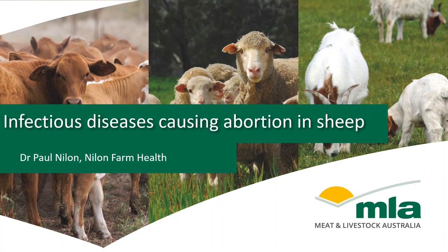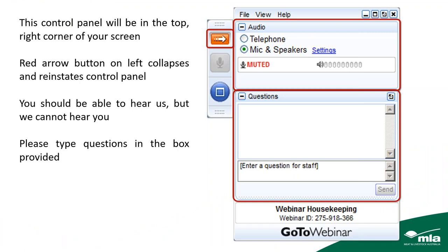Really looking forward to this one. Just a refresher — this is your control panel at the top of your screen. There is a red arrow on the left that collapses and reinstates it. You should be able to hear us but we cannot hear you, so please type your questions throughout the presentation in the box provided, as succinctly as possible, and I will relay them to Paul at the end of the webinar.